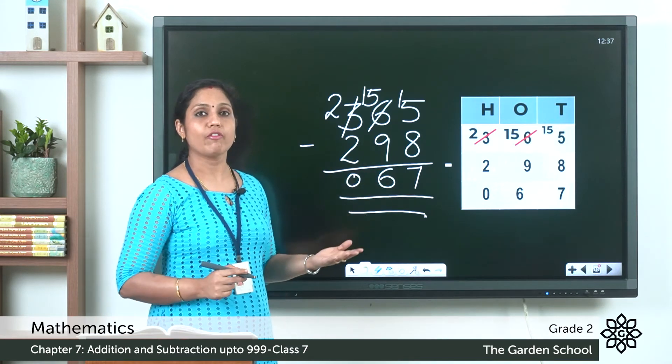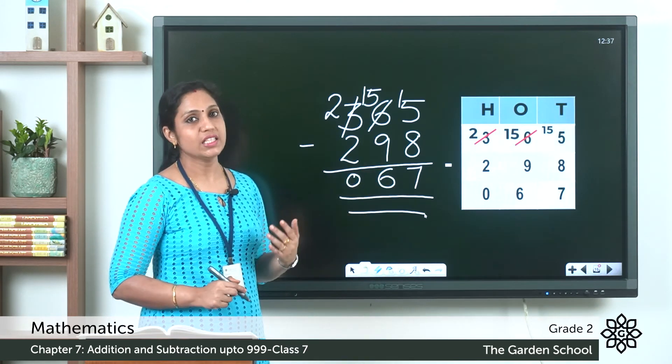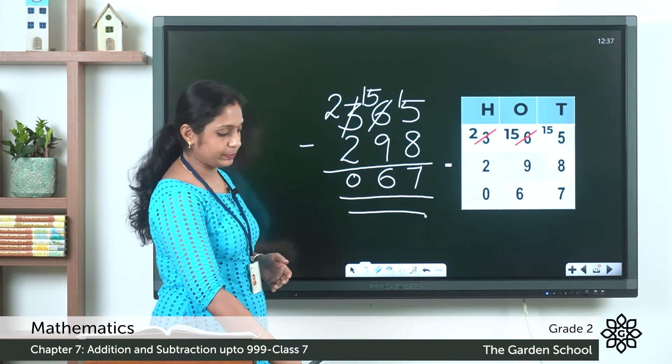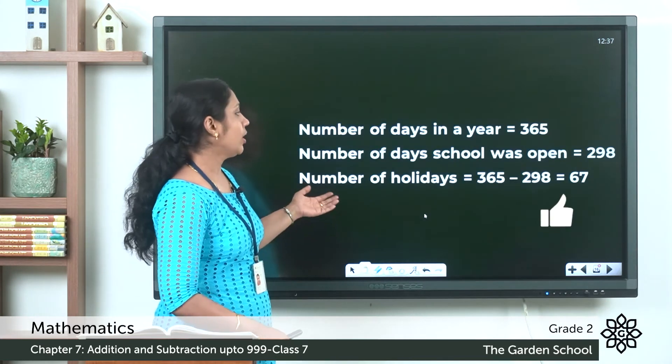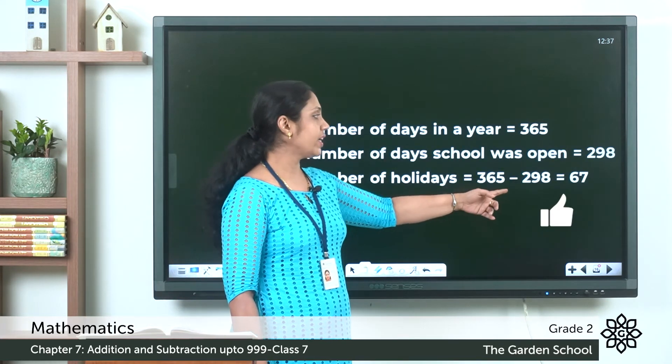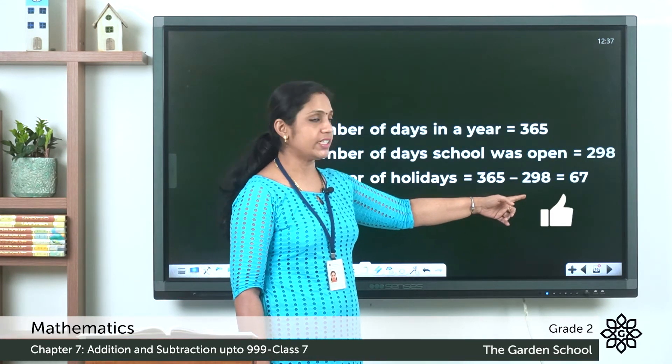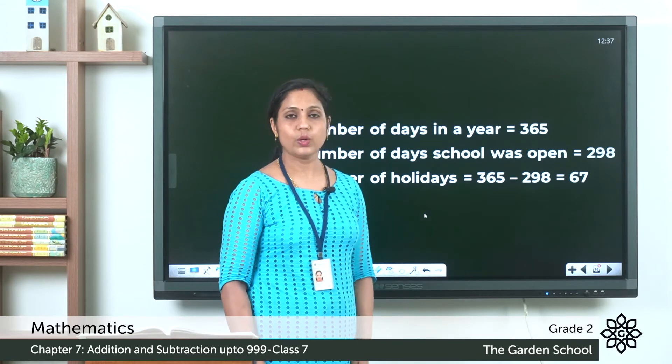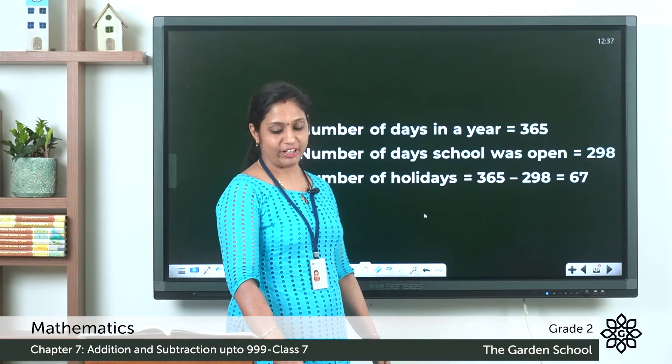The number of holidays is 67. Number of holidays is equal to 365 minus 298, which equals 67.